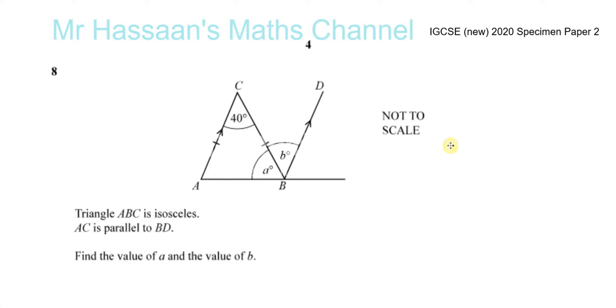Now for question 8 from the specimen paper for IGCSE 2020. It says triangle ABC is isosceles, AC is parallel to BD, find the value of A and the value of B. So it's a simple question on geometry and parallel lines and angles in triangles.